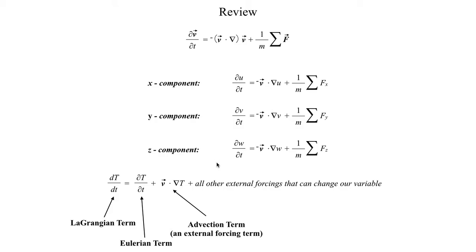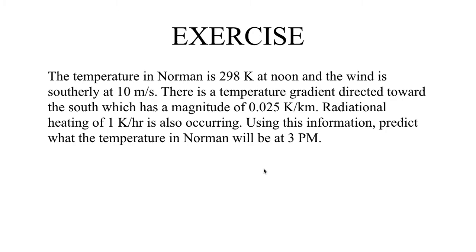To check your understanding, here's an exercise. Suppose the temperature in Norman, Oklahoma is 298 Kelvin at noon, and the wind is southerly at 10 meters per second. There is a temperature gradient directed toward the south with a magnitude of 0.025 Kelvin per kilometer. Radiational heating of 1 Kelvin per hour is also occurring. Using this information, predict what the temperature in Norman will be at 3 p.m. Please pause the video, take about 10 or 15 minutes to attempt to work through this exercise, then resume to see the worked solution.